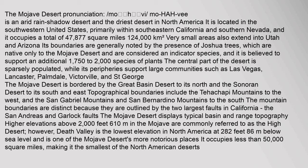While its peripheries support large communities such as Las Vegas, Lancaster, Palmdale, Victorville, and St. George. The Mojave Desert is bordered by the Great Basin Desert to its north and the Sonoran Desert to its south and east. Topographical boundaries include the Tehachapi Mountains to the west, and the San Gabriel Mountains and San Bernardino Mountains to the south. The mountain boundaries are distinct because they are outlined by the two largest faults in California.